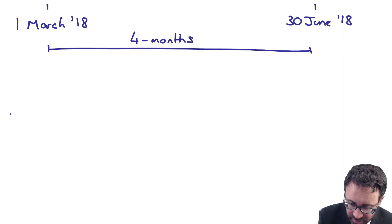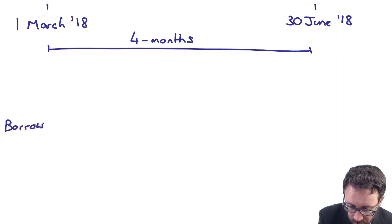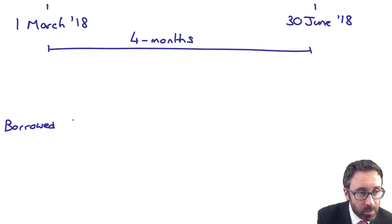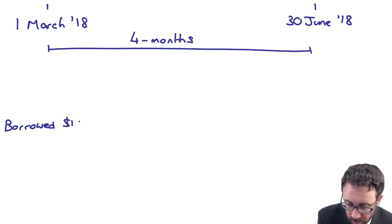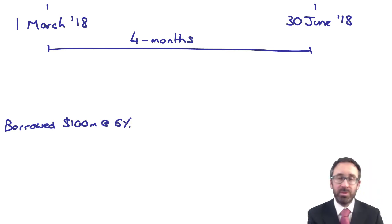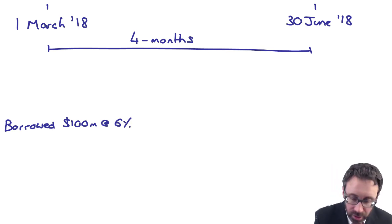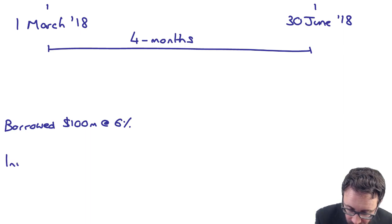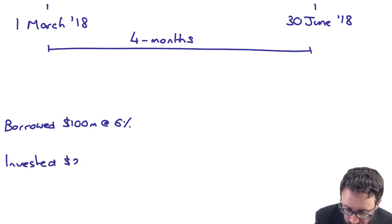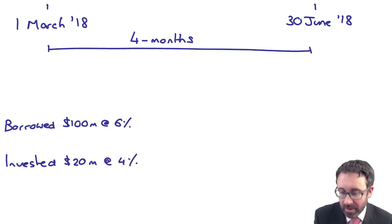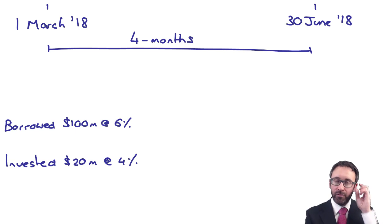We've borrowed 100 million at six percent. However, of that 100 million, we have invested 20 million and that will earn interest income at four percent.